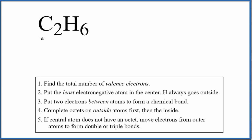Let's draw the Lewis structure for C2H6. This is called ethane. The first thing we do with Lewis structures, like this one for ethane, we count the total number of valence electrons.